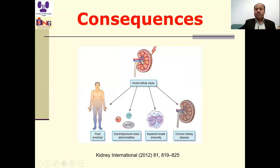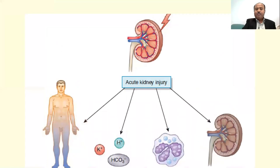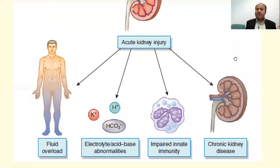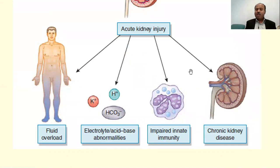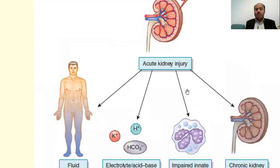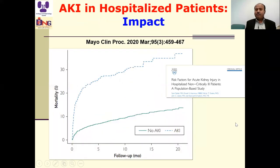The mortality associated with acute kidney injury even exceeds the sum of mortality associated with many common diseases like diabetes, heart failure, and breast cancer. Acute kidney injury is a potentially recoverable disease, but we should prepare ourselves to assess the patient because they may have fluid overload, electrolyte and acid-base abnormalities, impaired innate immunity, and may develop chronic kidney disease in the future. Most importantly, the patient may die. Acute kidney injury is associated with increased mortality compared to hospitalized patients without AKI.